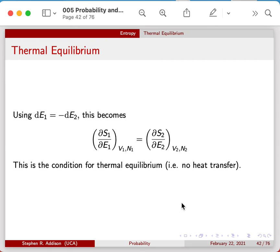And since dE1 is equal to minus dE2, we can write the condition in the following way. And this turns out to be the condition for thermal equilibrium, in other words, no heat transfer. And you notice I've added subscripts to my partial derivatives because this equation holds particularly when V1, N1, V2, and N2 are all held constant. So we have then some relations in terms of our partial derivatives for this thermal equilibrium.